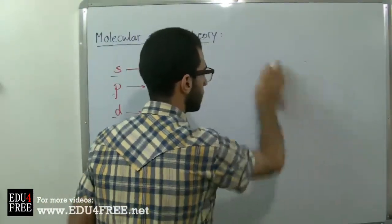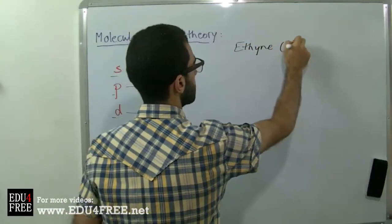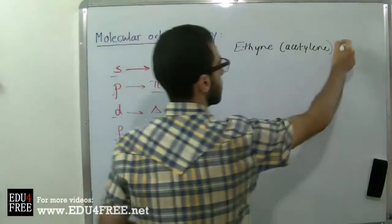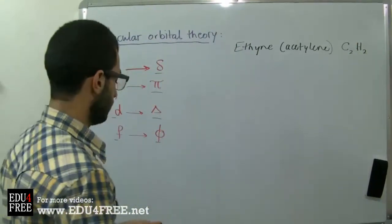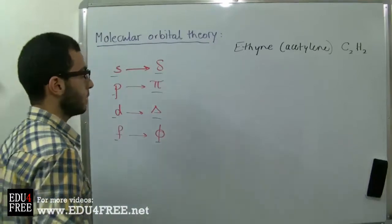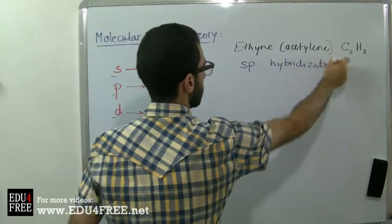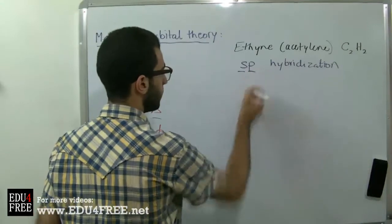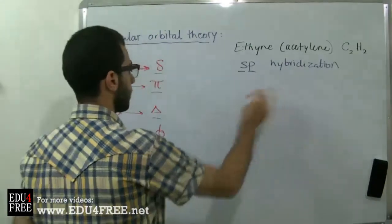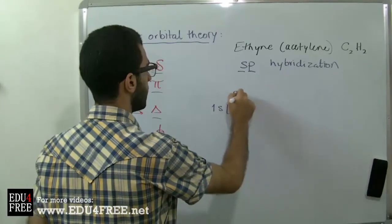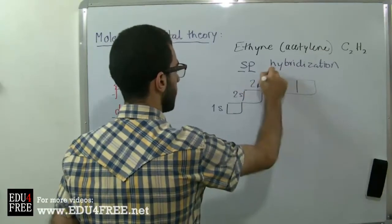We have ethyne or acetylene, which has the molecular formula C2H2. The type of hybridization here is SP hybridization, so we are going to use one s orbital and one p orbital, which is the Px. The electronic configuration of carbon is 1s, then 2s, then 2p. The 2p contains three orbitals: Px, Py, and Pz.